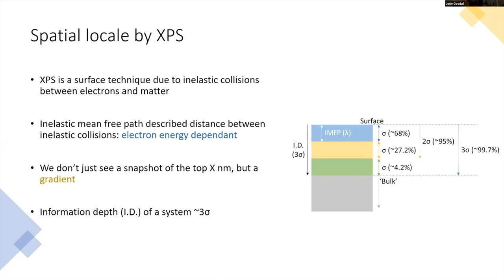We tend to refer to the information depth of a sample as roughly three times the inelastic mean free path. If you're familiar with the empirical rule for normal distribution, about 68% of the information comes from the top inelastic mean free path, 95% from about two times, and 99.7% from three times. This is essentially what we think of as our information depth. But you can see that not only are you seeing the top of the material, there's also information from different parts of the sample at different depths.